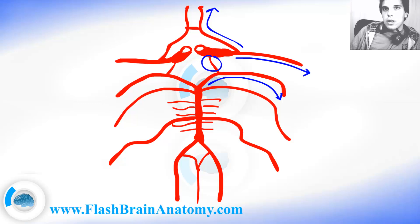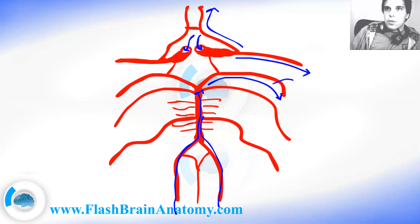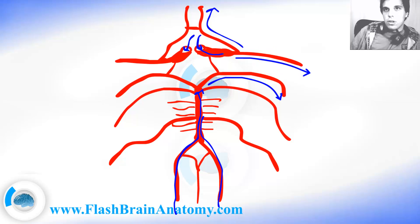Now, we had two communicating arteries here and here, then three arteries here and here, and this was the internal carotid artery. This is where the blood comes from — through the internal carotid artery — and it also comes through the vertebral arteries, through the basilar artery. Usually the blood in the posterior cerebral artery comes from the basilar artery, and in the anterior cerebral artery and the middle cerebral artery the blood comes from the internal carotid artery.